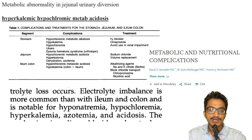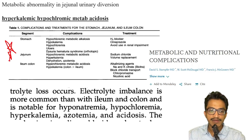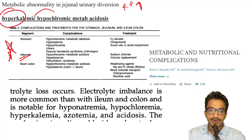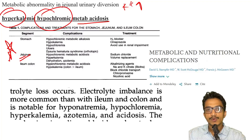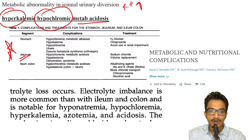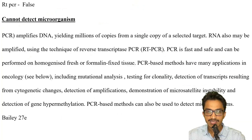The metabolic abnormality in jejunal urinary diversion has not been directly given in Bailey or Sabiston, but from articles the important finding is hyperkalemic hypochloremic metabolic acidosis. Don't worry if you were not able to answer this — it is a slightly tough question. The answer is hyperkalemic hypochloremic metabolic acidosis.